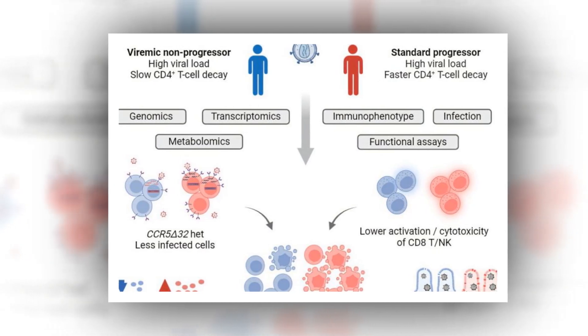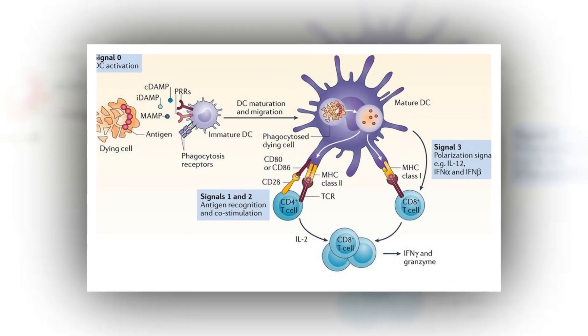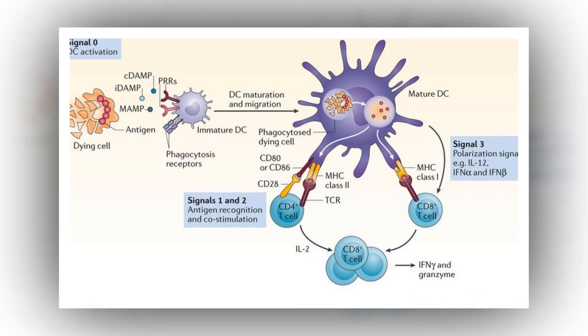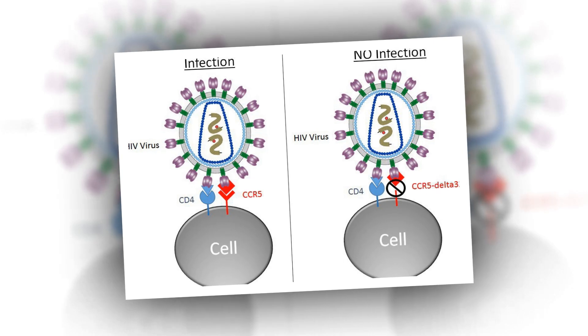Observations in the viremic non-progressor omics: VNPs were more likely to carry one copy of the gene CCR5 with a delta-32 deletion and one copy without, 53.8% heterozygosity, compared to progressors, 16.0%.